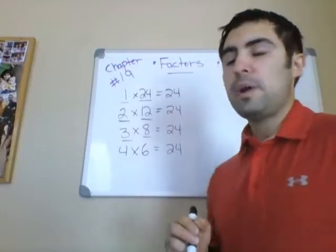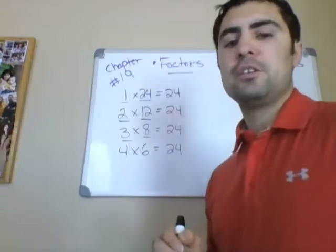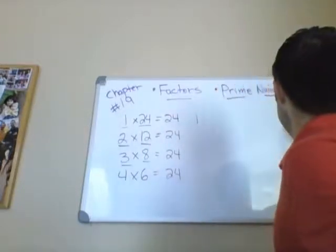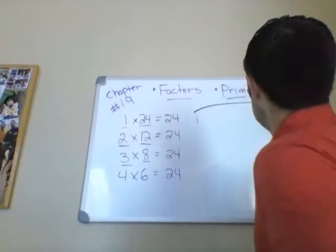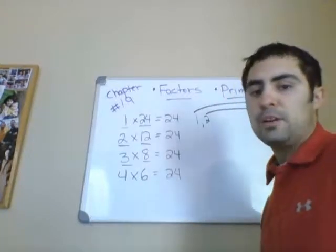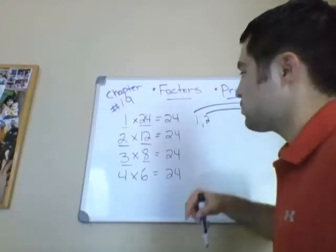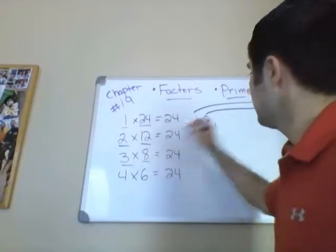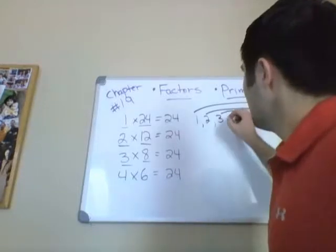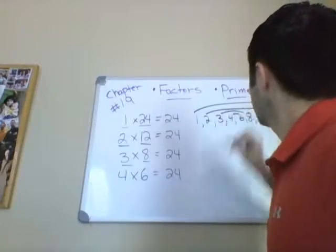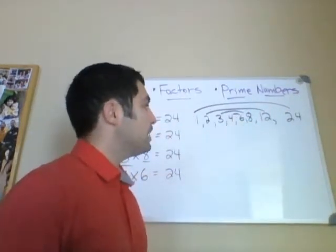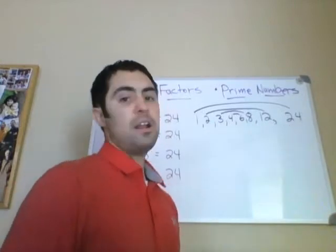I like doing what I call rainbow factoring. That will help you find all the factors for a given number. If you're going to factor out 24, we know that 1 and 24 are always factors. The next pair is 2 and 12 — notice I'm connecting the pairs with a line. The pairs of numbers that when multiplied together equal 24. Then 3 and 8, and our last pair is 4 and 6. Once you get to the center and 5 is not a factor, you know you have every single factor for 24.